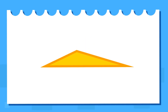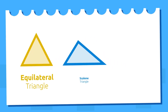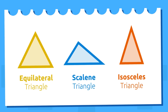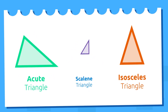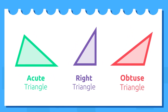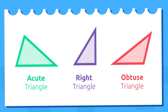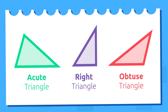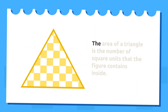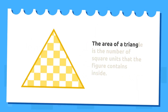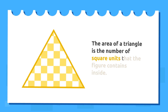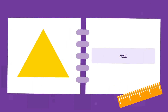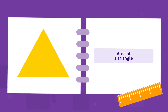As you know, there are different types of triangles: equilateral triangle, scalene triangle, isosceles triangle, acute triangle, right triangle, and obtuse triangle. Today we will learn how to calculate the area of all of them. As you can see in this image, the area of a triangle is the number of square units that the figure contains inside.